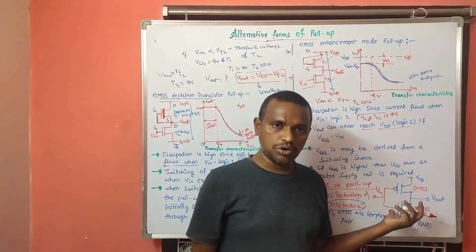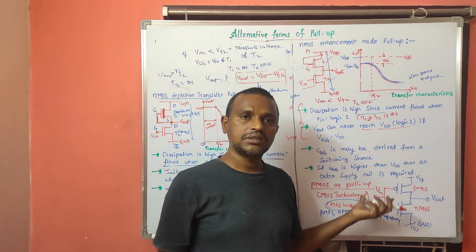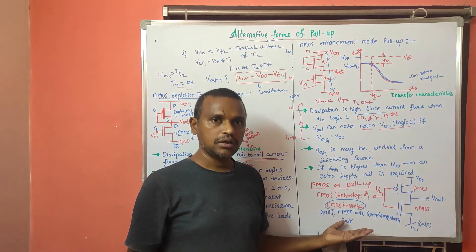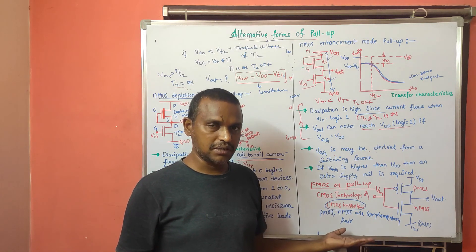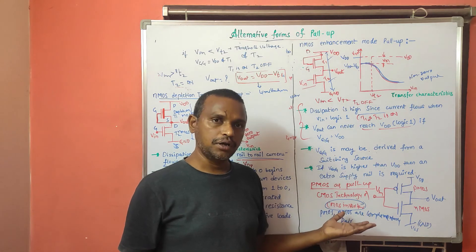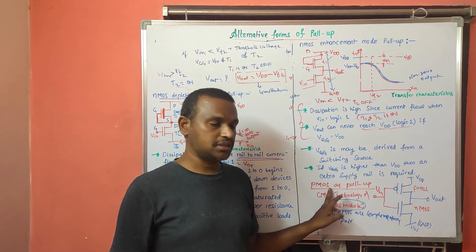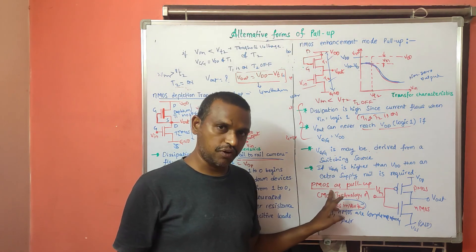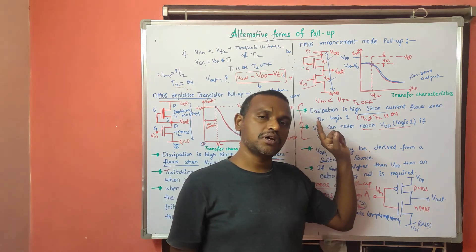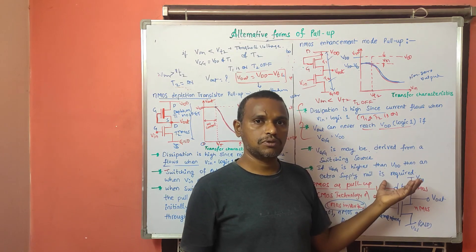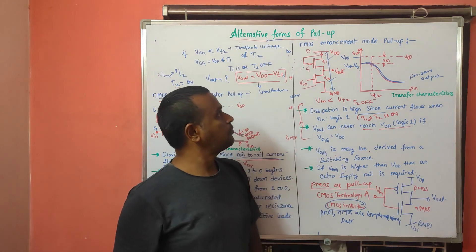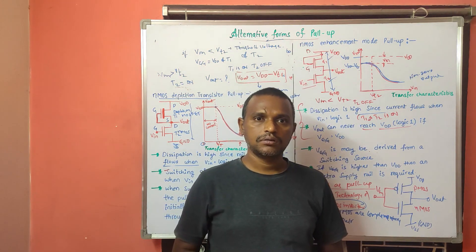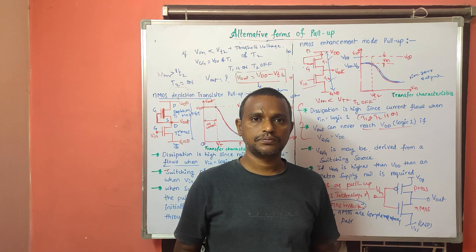We will discuss thoroughly about this CMOS inverter in the next discussion. Here I have just introduced that the alternative form of pull-up using CMOS is where P-MOS is used as pull-up instead of depletion MOSFET, enhancement MOSFET, or resistive load — to avoid all the limitations. This is about the alternative forms of pull-up. Thank you.